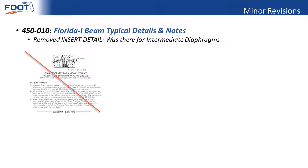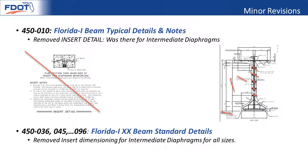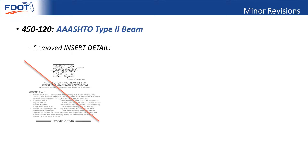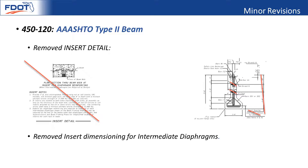Here are some of the minor revisions that might be of interest. For the four I-beam, all the sizes — we removed the insert for the intermediate diaphragms because we don't really use the intermediate diaphragms at all, along with all the dimensioning, and that's for all the sizes. We did the same thing for the AASHTO Type 2 beams.